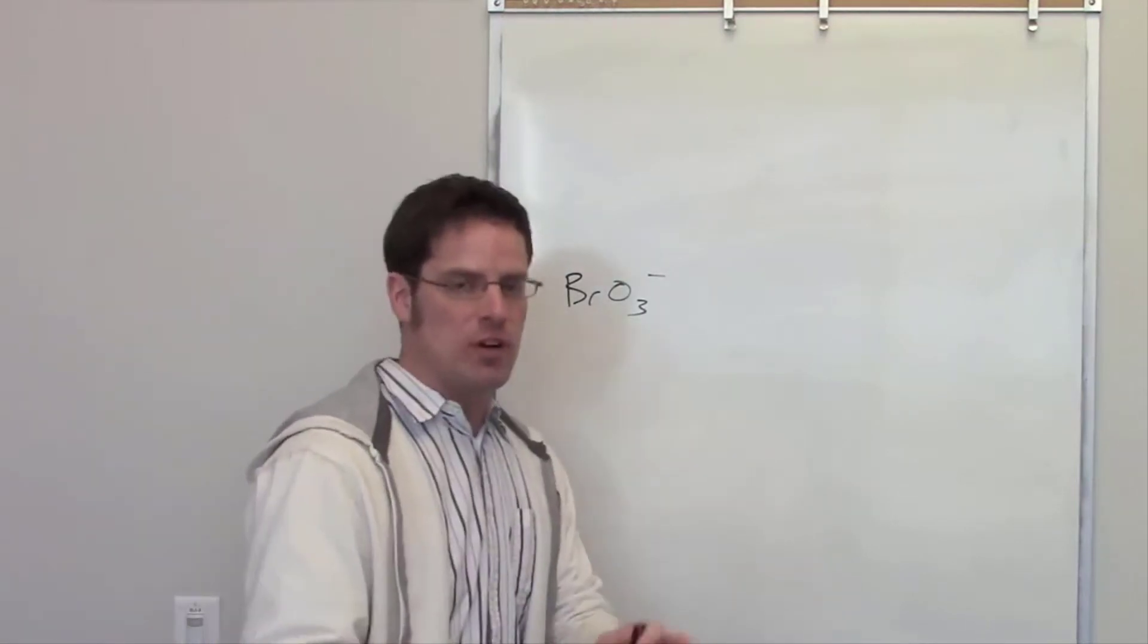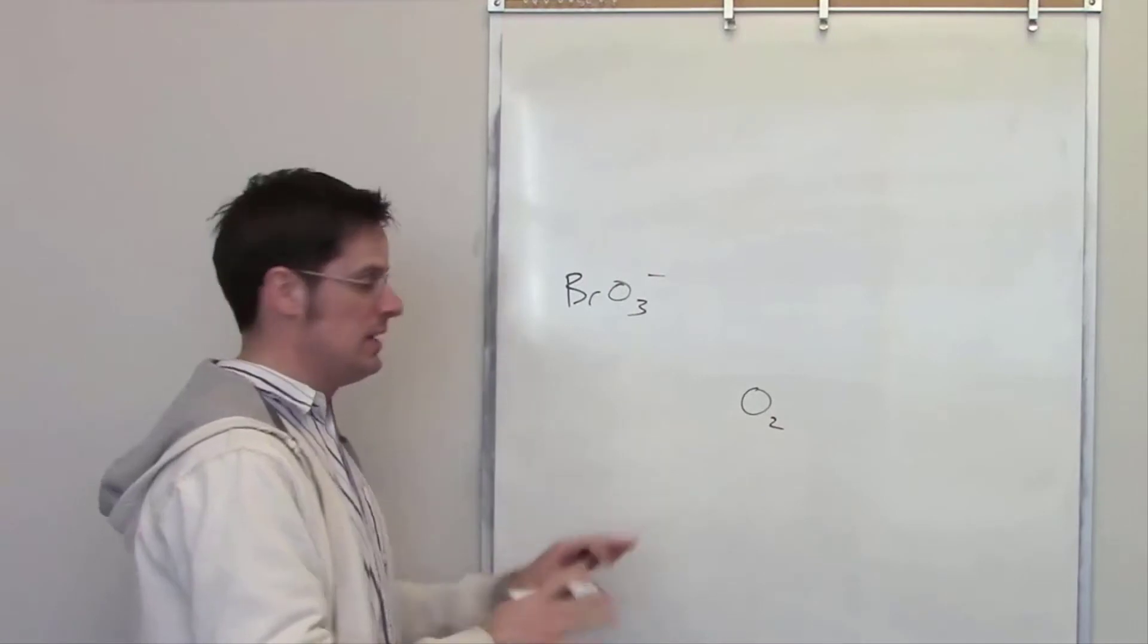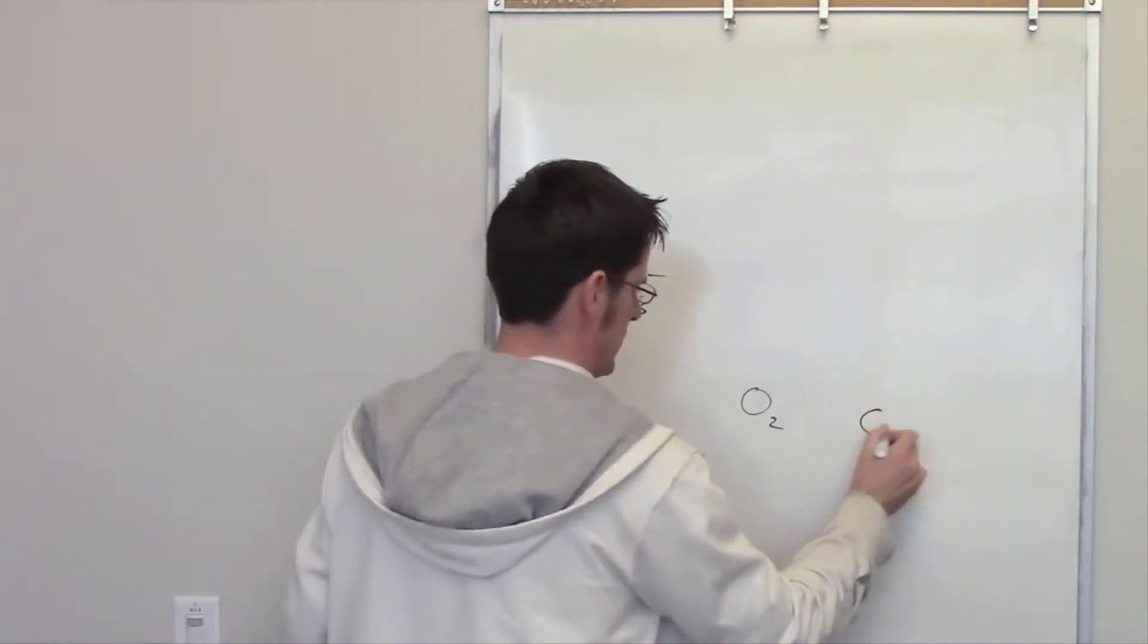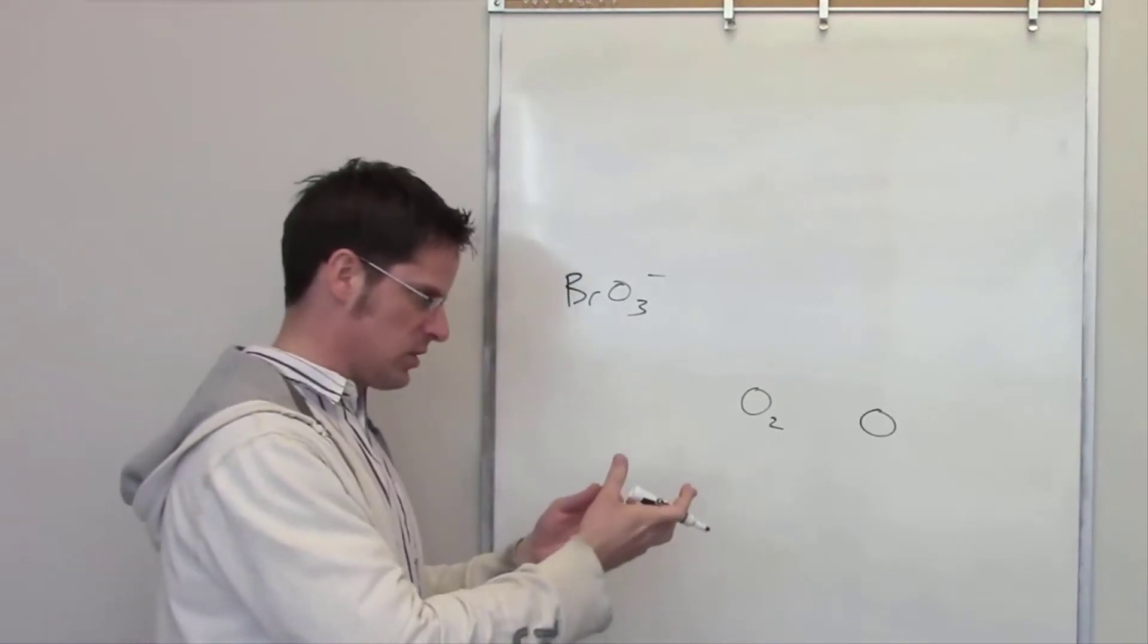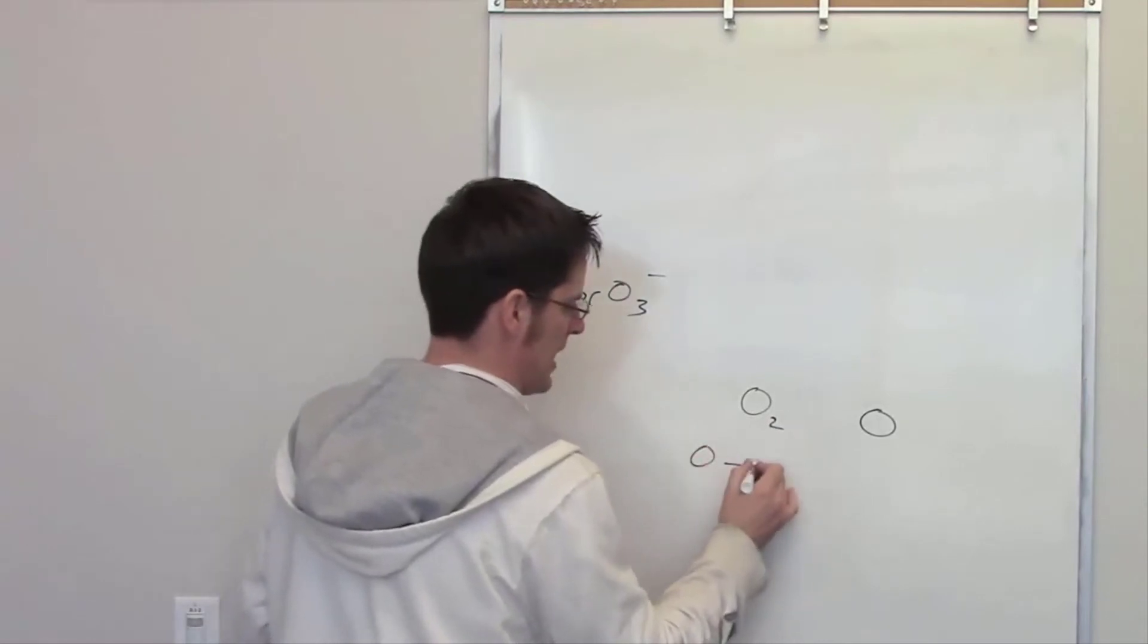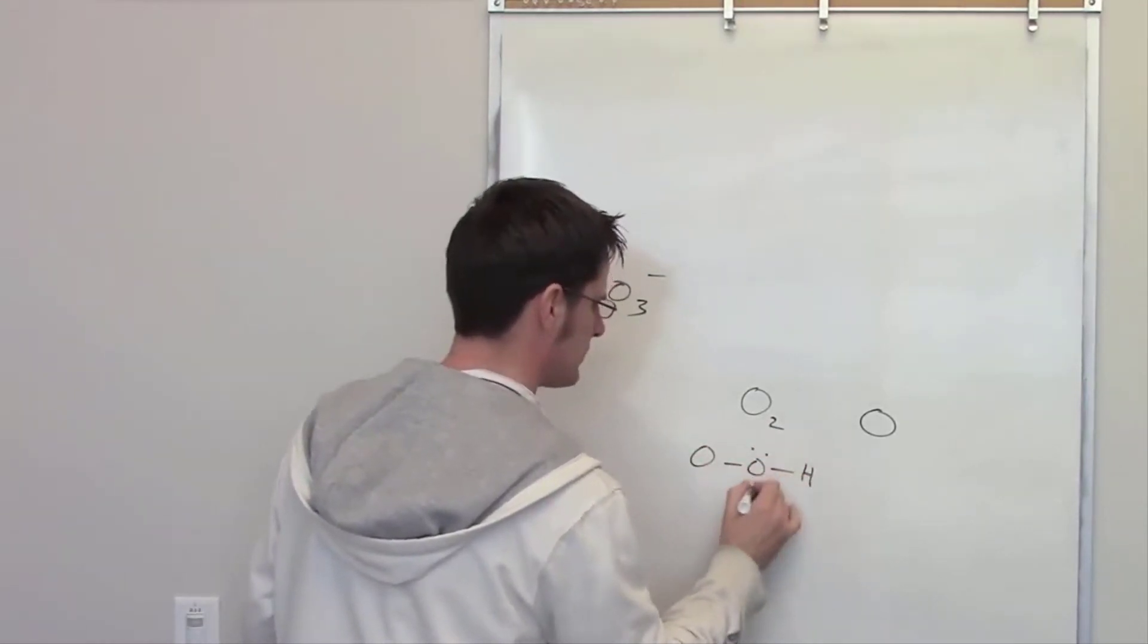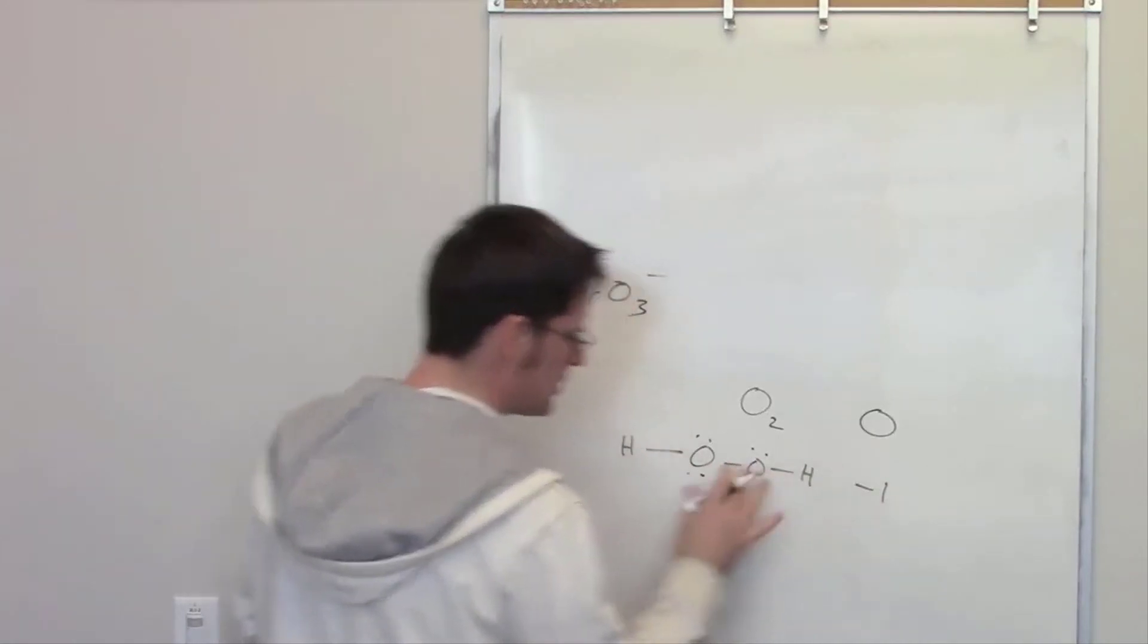basically three different oxidation numbers. If you have O2 all by itself, that kind of oxygen has an oxidation number of zero because it's elemental - it's only oxygen bonded to other oxygens, no charge, zero. If you have oxygen in a peroxide, a peroxide like hydrogen peroxide shown here, the oxidation number of those kinds of